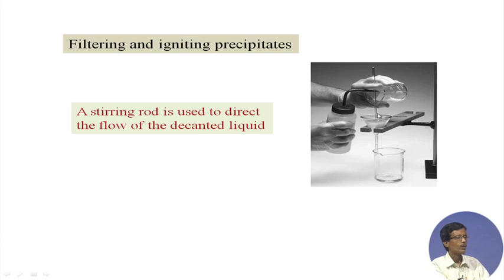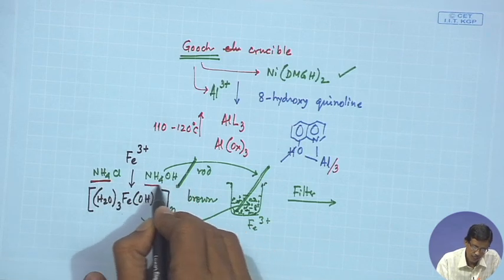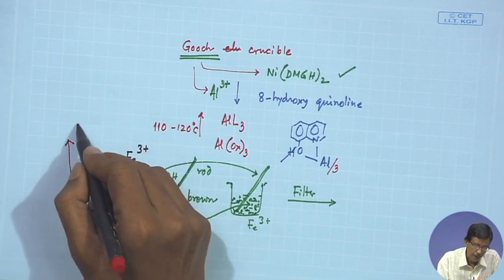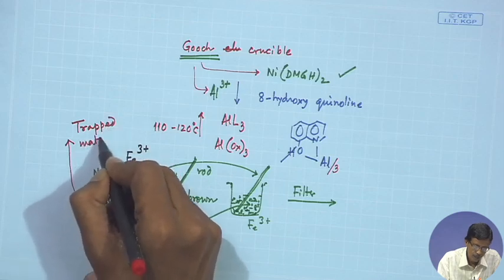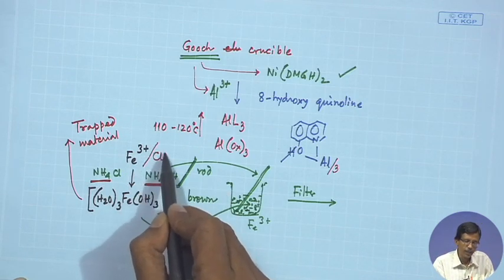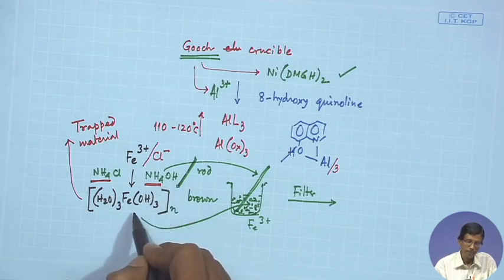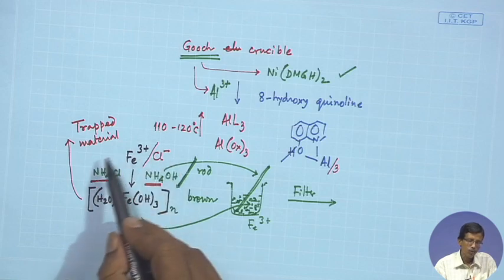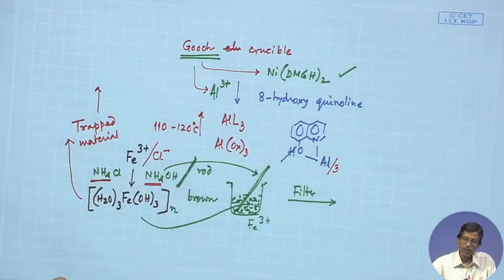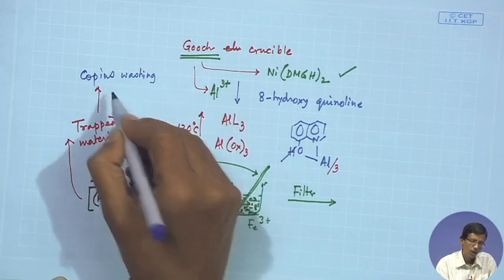The water flowing by the side of the rod washes your ferric hydroxide. The ferric hydroxide can have trapped materials — ammonium ions, chloride ions from ferric chloride handling, and excess hydroxide ions not used for the precipitate. All these anions must be washed out by copious washing of the precipitate.